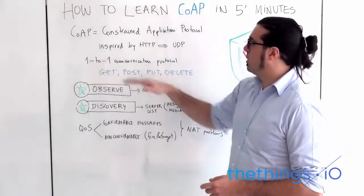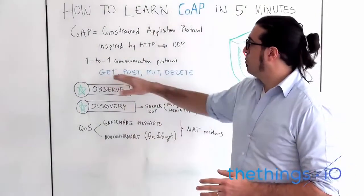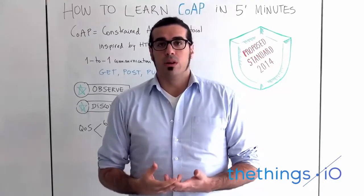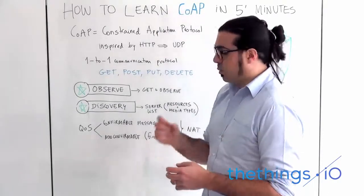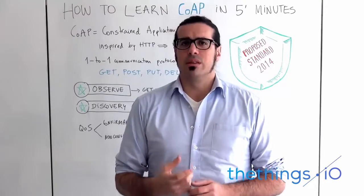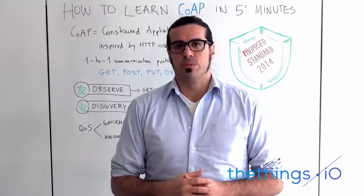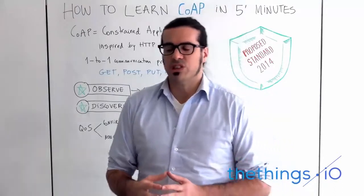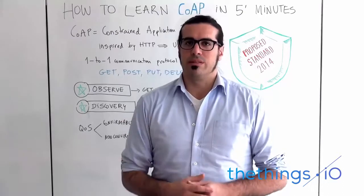CoAP is a one-to-one communication protocol inspired by HTTP, so it uses the GET, POST, PUT, and DELETE actions on the hardware and on the protocol. That said, it's more lightweight and also designed for devices that need low energy treatment. For example, if you are using a battery, this is more energy efficient than if you are using HTTP or REST APIs.